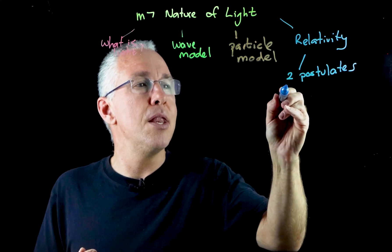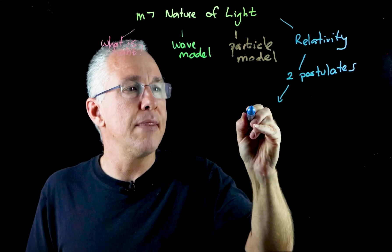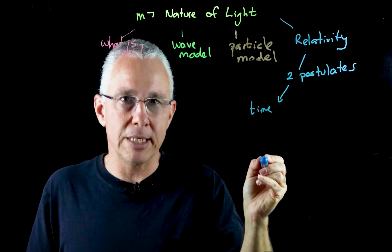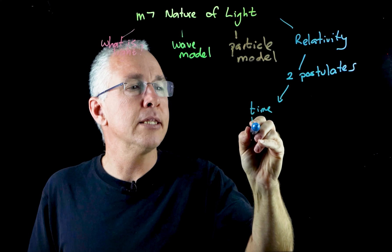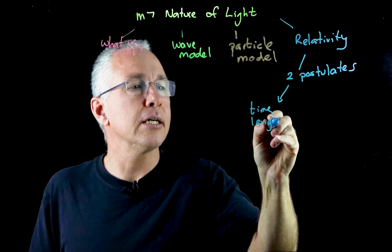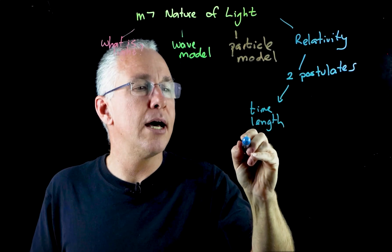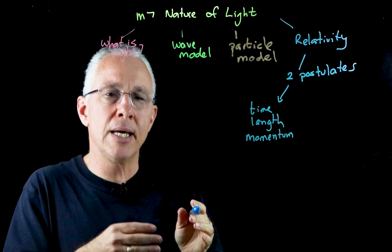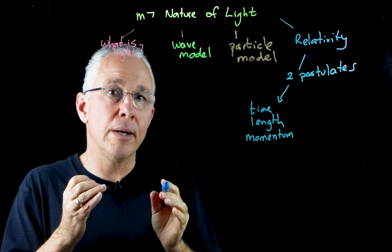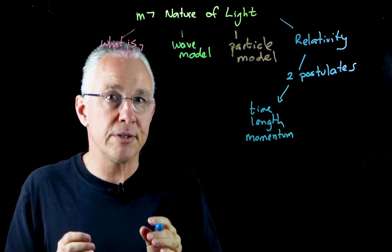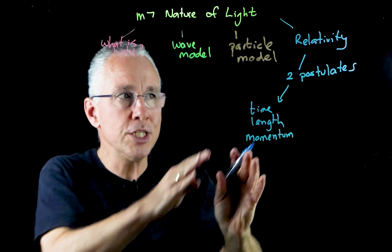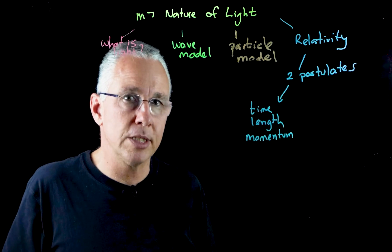But out of that comes a number of consequences and they relate to the concept of time changing. We call this time dilation. We talk about length changing or length contraction. And we also have momentum dilation. So in other words time, length and momentum when measured by two different people in different frames of reference will end up getting different results. So those are the consequences of those two postulates.